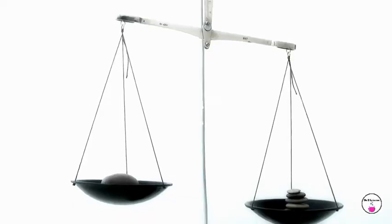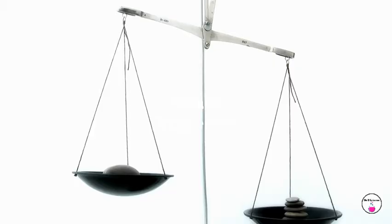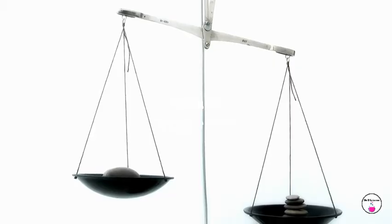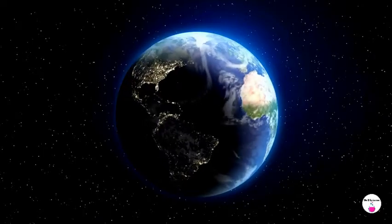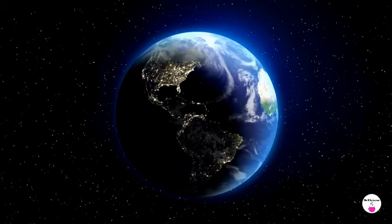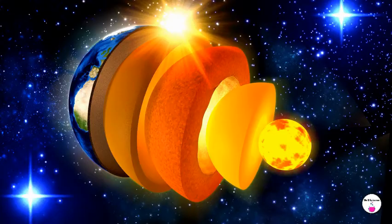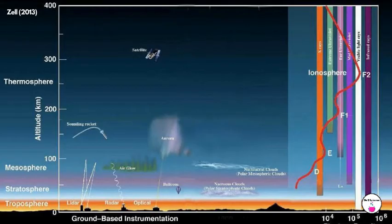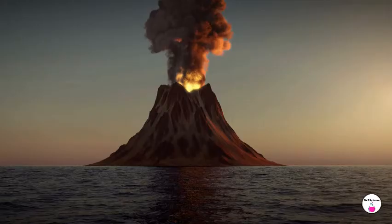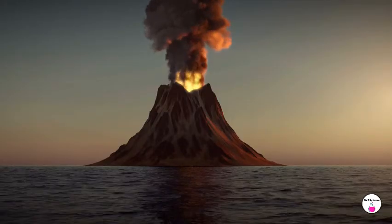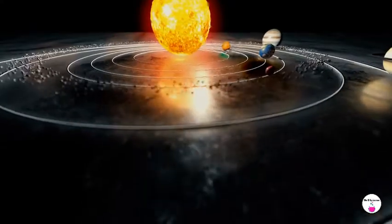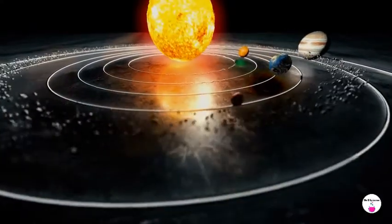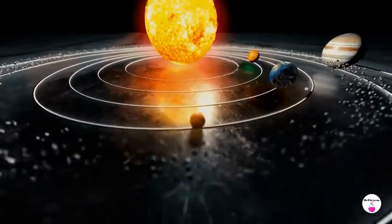Scale properties are the physical characteristics of an object that relate to its size. For example, the scale properties of a planet could include the size of its layers, such as its crust or atmosphere, the size of its surface features, such as volcanoes or mountains, and the size of its orbital radius, which is the path it takes around the sun.